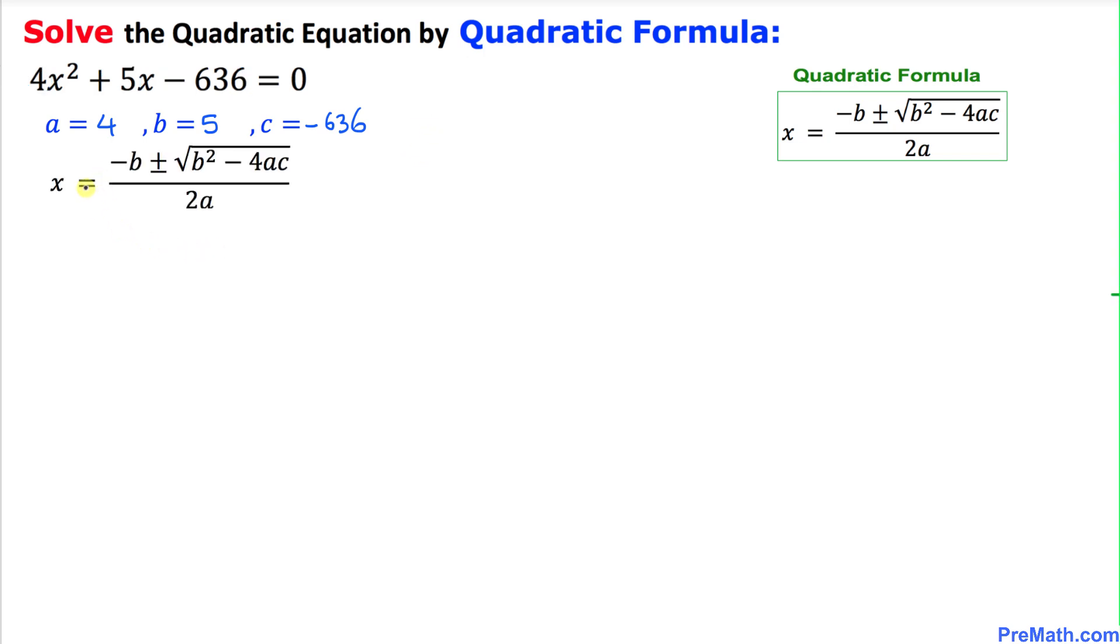Here is our quadratic formula. Let's go ahead and fill in the blanks. So x equals negative b, in our case 5, plus or minus the square root of b squared, that's 5 squared, minus 4 times a which is 4 and c is negative 636, everything divided by 2 times a, in our case 4.